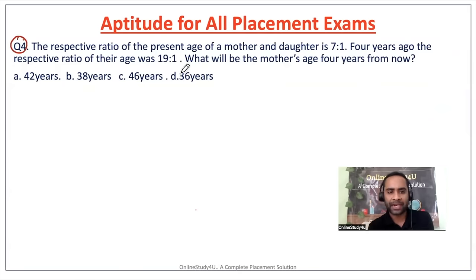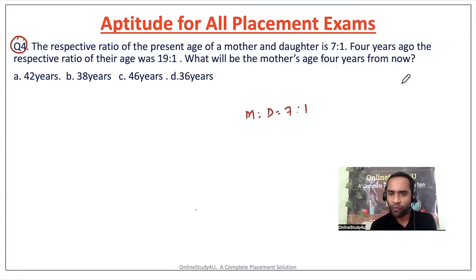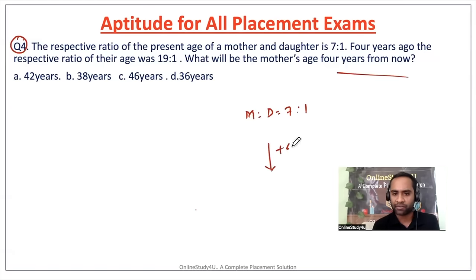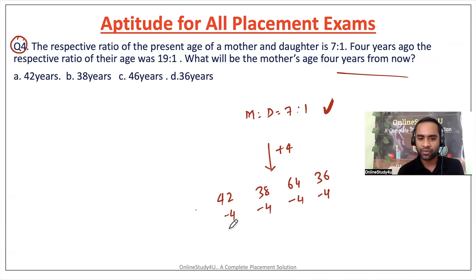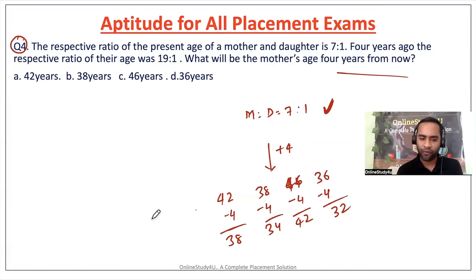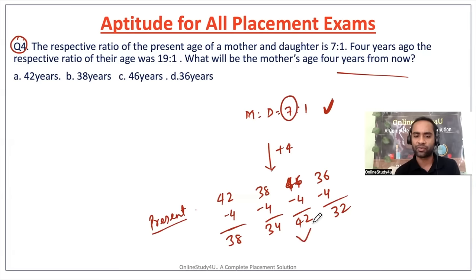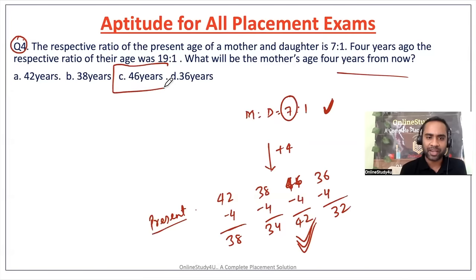Question number four: the respective ratio of the present age of mother and daughter is 7:1. Four years ago the respective ratio was 19:1. What will be the mother's age four years from now? We subtract 4 from the future options to get the present age. The mother's present age must be a factor of 7. Among the options, 42 is the factor of 7, so option C — 42 — is the correct answer. You don't even need pen and paper for this.